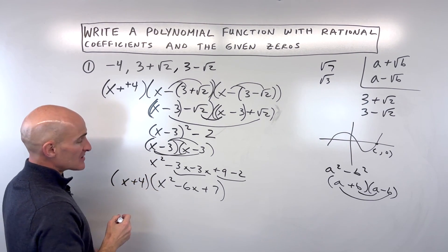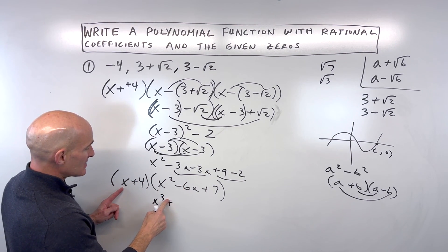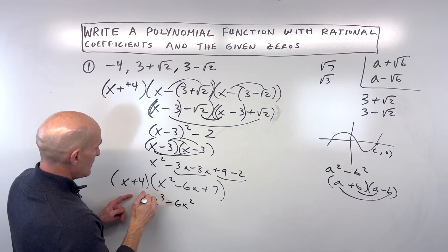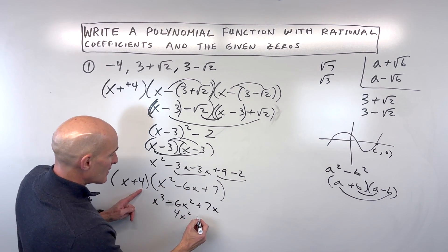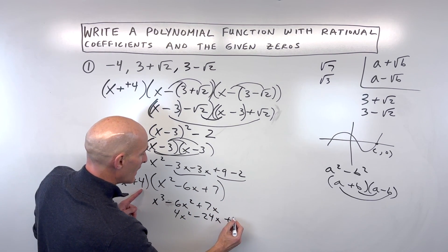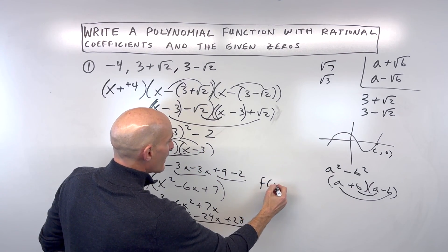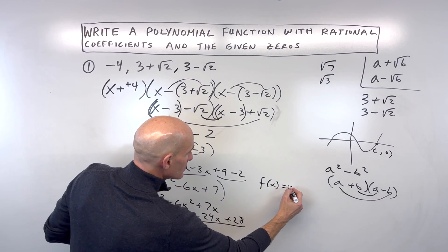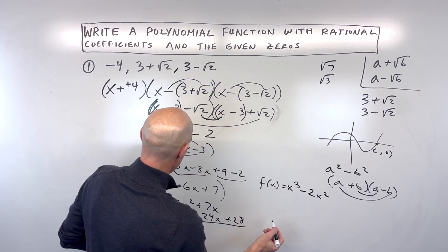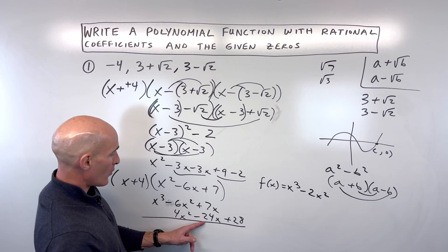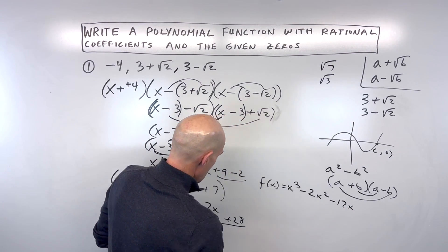Now we multiply these together. x times x squared is x cubed, x times negative six x is negative six x squared, x times seven is seven x. Distributing the four gives four x squared, four times negative six x is negative 24x, and four times seven is 28. Adding these together, we get x cubed, negative six x squared plus four x squared is negative two x squared, seven x minus 24x is negative 17x, plus 28.